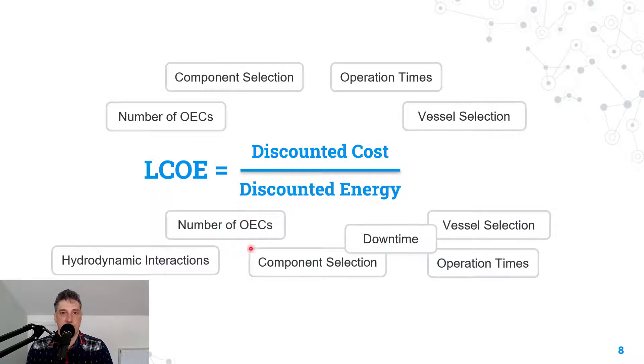A number of these factors also contribute to the bottom. Again, the number of OECs, the interactions between them, the downtime of the devices, and that downtime is affected by the vessels chosen, the operational times, and the component selection. You can see it's an interesting optimization problem to balance the top and bottom of this equation.